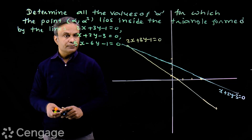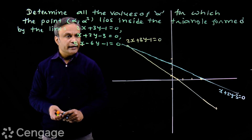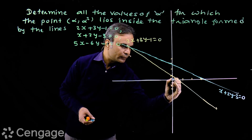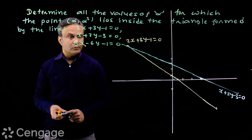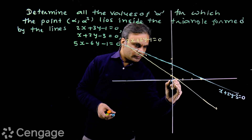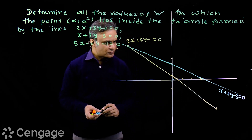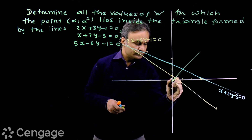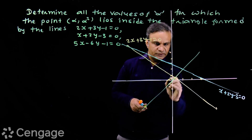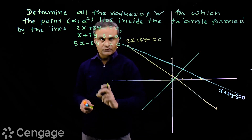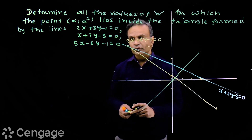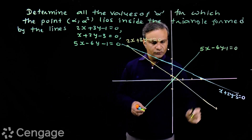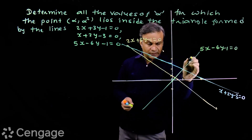Now for the line 5x - 6y - 1 = 0, the x-intercept is 1/5, a very small value, and the y-intercept is -1/6, also very close to the origin. We join these two points. Remember, this is the origin, and the origin lies on one side of this straight line. This is a close problem, so we must draw it with attention. This line does not pass through the origin.